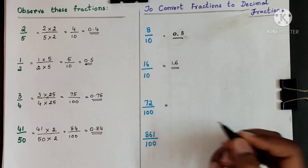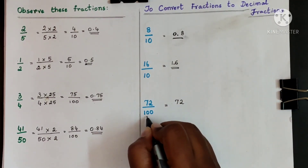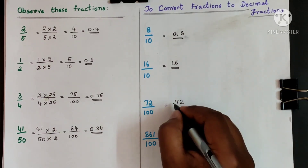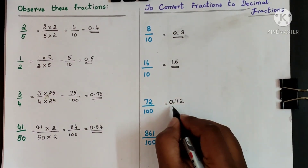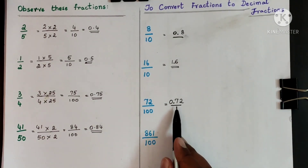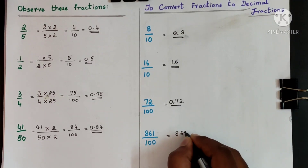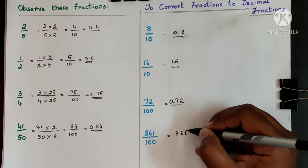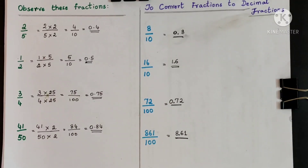Same way, 72 hundredths — how do you write that? Write 7 and 2 as they are. Now here there are 2 zeros in the denominator, so put the decimal point after 2 digits from the right: 1, 2. Put a decimal point. In front of the decimal point you cannot leave it empty, so replace it with 0. So 72 hundredths can be written as 0.72. Here also, 861 hundredths — write the number 861 as it is. 2 zeros in the denominator, so put the decimal point after 2 digits from the right: 1, 2, decimal point. So 861 hundredths can be written as 8.61 in decimal fractions.